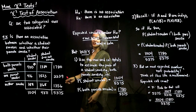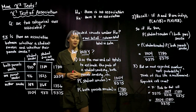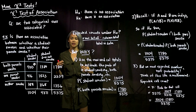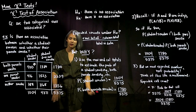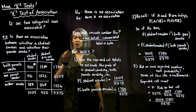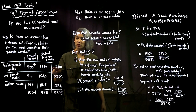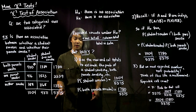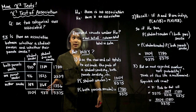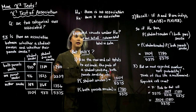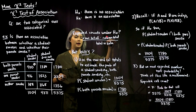In the previous video, we talked about chi-squared test of association, and we said that we're going to get the expected cell counts by doing row total times column total divided by the total sample size — and that's the expected cell count under the null hypothesis.